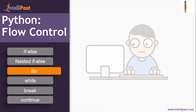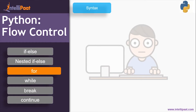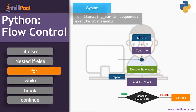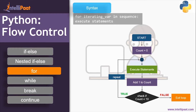Next is the for loop. The syntax is: for iterating variable in sequence, colon, execute statement. Here's an example — we define a variable count equal to zero, execute the statement, then increment the value of count by one, and then check the condition. If count is less than 10, say one is less than 10 — yes, the condition is true.